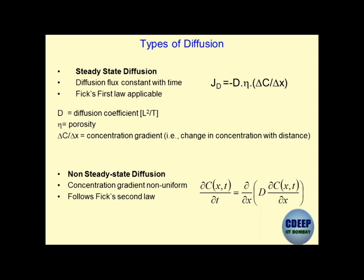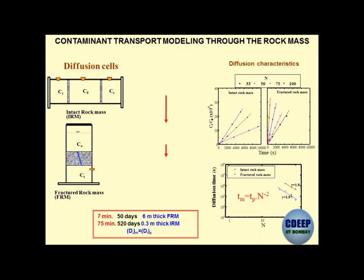I had also emphasized that it is very important to determine the coefficient D, which is the diffusion coefficient. This is equivalent to the coefficient of consolidation Cv. I have shown different types of experiments which have been done for fractured rocks and intact rock mass, and how to derive the parameter - the diffusion coefficient.